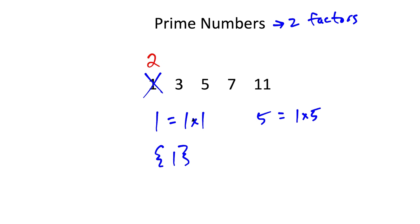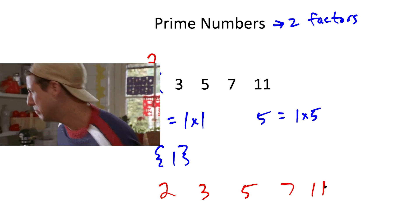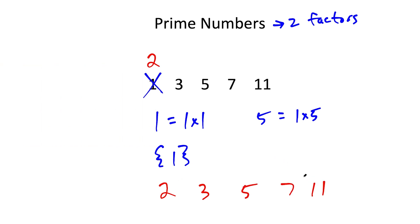So if Ms. Vaughn had instead written 2, 3, 5, 7, 11, then she would have correctly written the first 5 prime numbers. Now before you go, if you know of any other math movie mistakes, please share them in the comment section below. Thanks for watching.